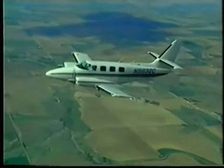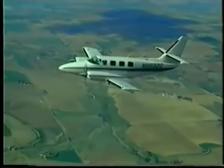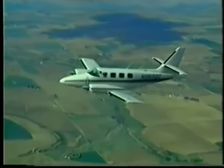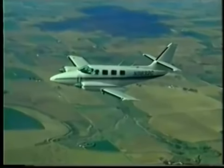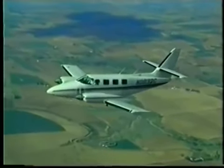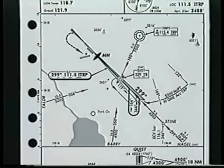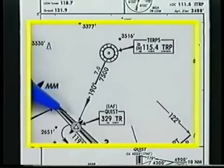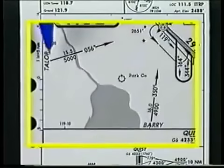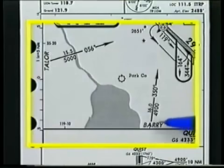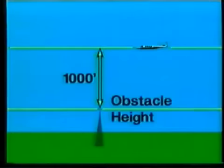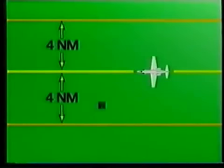Now let's look at the various flight paths illustrated on the plan view. Besides the various segments, approach transitions may also be shown to assist you when departing the en route structure for the initial approach fix, especially where the IAF is not part of the en route structure. There are several approach transitions on the TERPS plan view: one starts at the TERPS VOR, another begins at Taylor intersection, and another at Barry intersection. All three are flyable routes which provide at least 1,000 feet of obstacle clearance when you're flying at the prescribed altitude. This obstacle clearance extends 4 nautical miles on either side of the charted course.